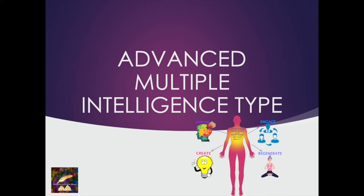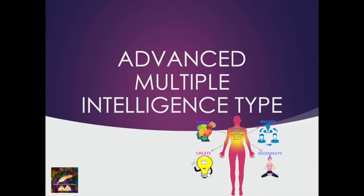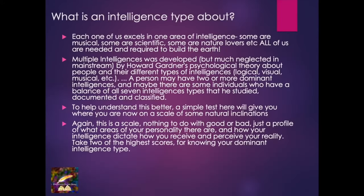What is this multiple intelligence type about? Each one of us excels in one area of intelligence or intellect. Some are musical, some are scientific, some are mathematical, some are nature lovers — there are so many different types. All of us are needed and required to build a good earth. Multiple intelligences were developed but much neglected in the mainstream education system and evaluation system.